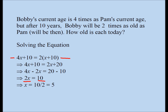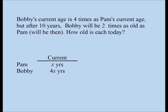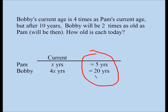So if x equals 5, they want us to find Bobby's current age and Pam's current age. From one of the first slides, Pam was originally x years old and Bobby was 4x years old. Now I do know what x is. So my answer will be Bobby is 20 years old and Pam is 5 years old. These are my two answers.